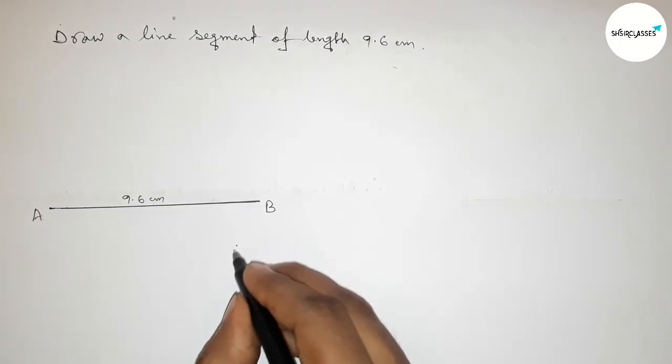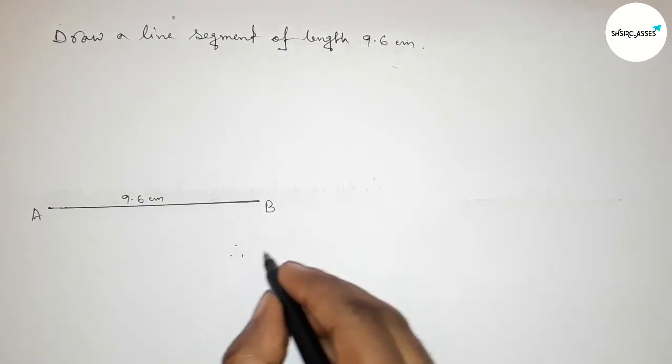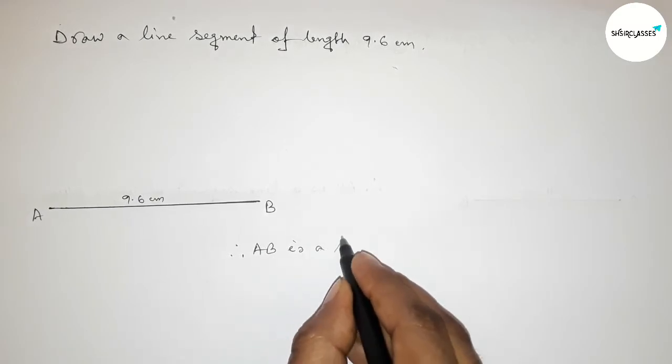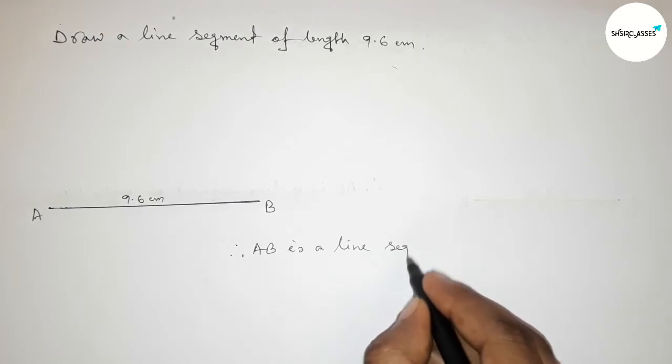Therefore we can say that AB is a line segment of length nine point six centimeters.